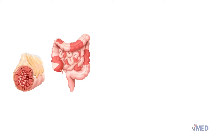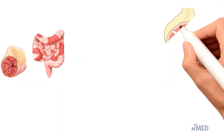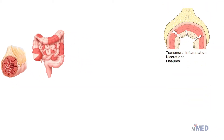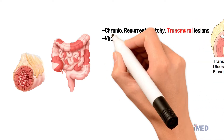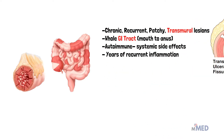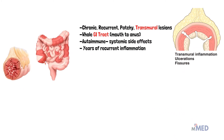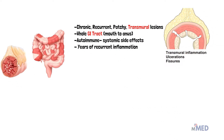Crohn's disease is a unique chronic condition with recurrent patchy transmural lesions from the mouth to anus, especially in the terminal ileum. Crohn's disease can affect any part of the GI tract, as opposed to ulcerative colitis which affects only the rectum and the colon.